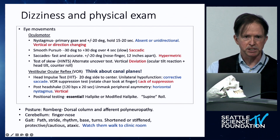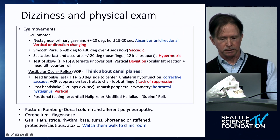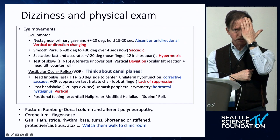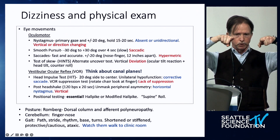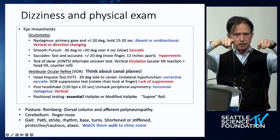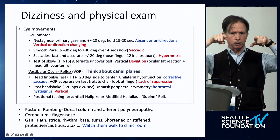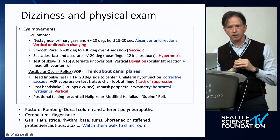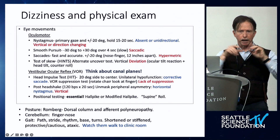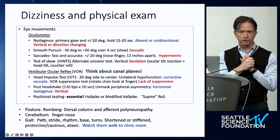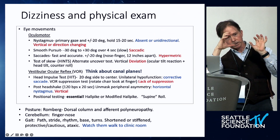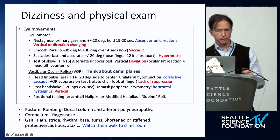Test of skew is another important assessment. The easiest method is the cover-uncover test: place your hand in front of one eye, then remove it — the eyes should remain aligned vertically. If the eye corrects from up to down or down to up when the cover is removed, that's skew deviation, which is abnormal. This is different from the ocular tilt reaction, where you see eye torsion plus head tilt plus deviation — and in that case it can be a peripheral finding.